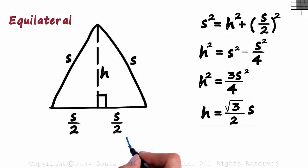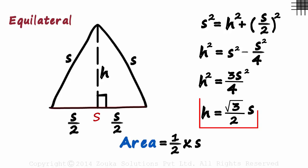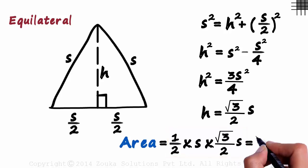The basic formula for the area of a triangle is one half base times the height. That will be half, the base is s, and the height is root 3 by 2 times s. Solving this further, we get the area of an equilateral triangle as root 3 by 4 times s squared. That's our formula.